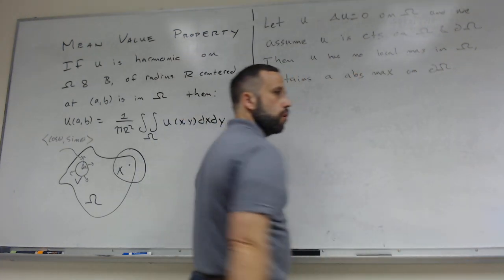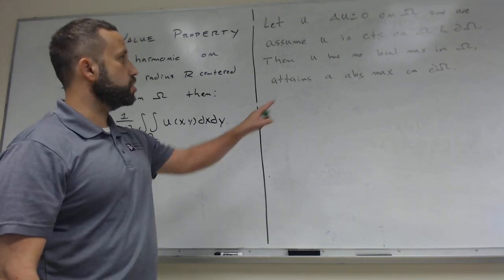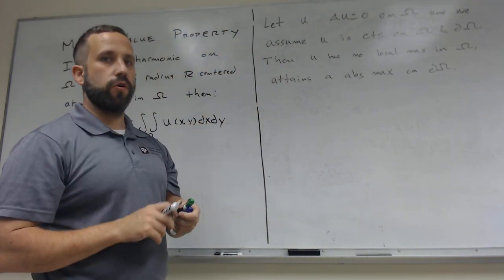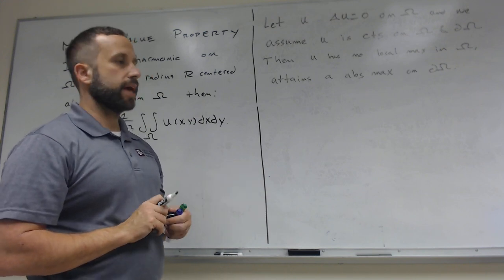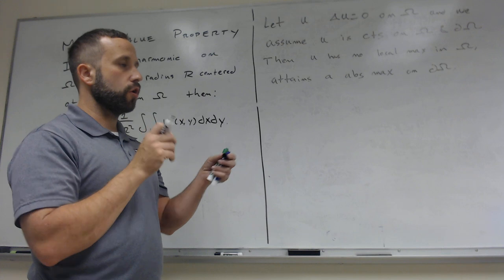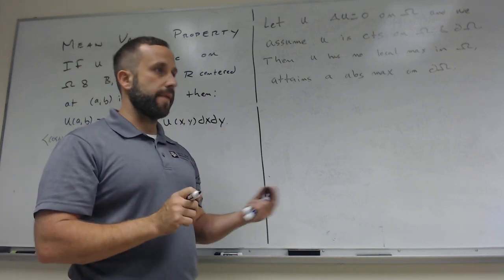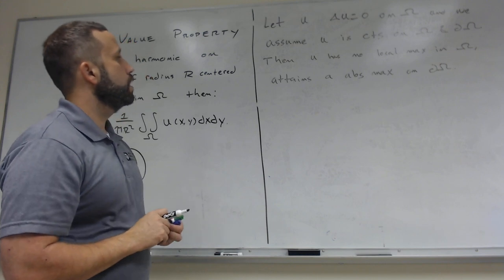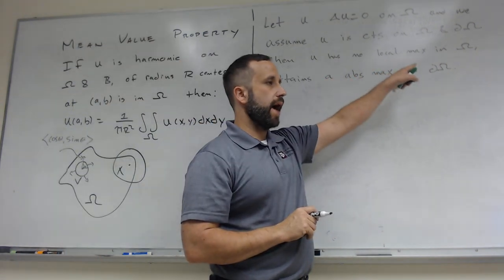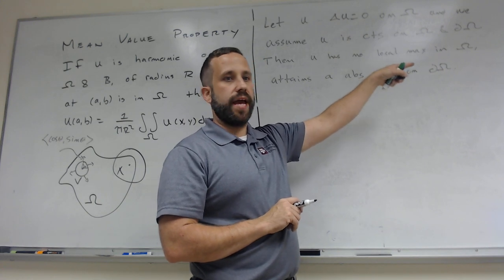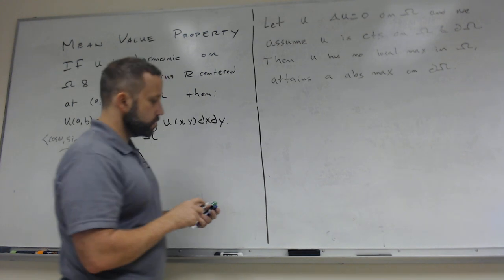Since U is continuous and omega together with its boundary is closed and bounded — a compact set — U must attain a maximum somewhere on omega or its boundary. So if it doesn't attain a local max in the interior of omega, it has to attain its absolute max on the boundary. Let's prove this by contradiction.